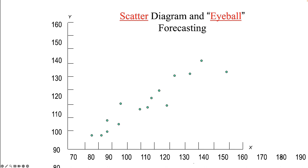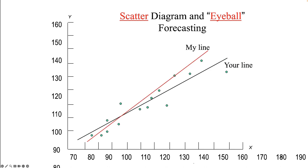Let's say we collect data on two variables for several people and plot each observation. Each dot is a person, and for each person they have both an x score and a y score, where the x's are on the horizontal axis and the y's are on the vertical axis. If you and I were asked to draw a line that best represents the scatter plot, your line might be slightly different from mine.